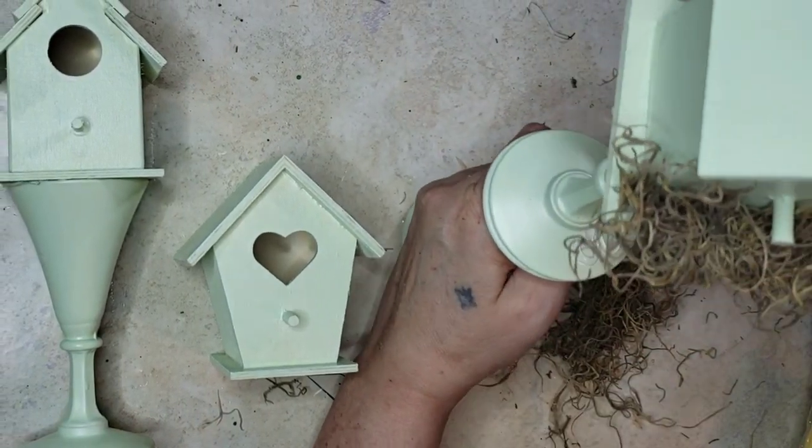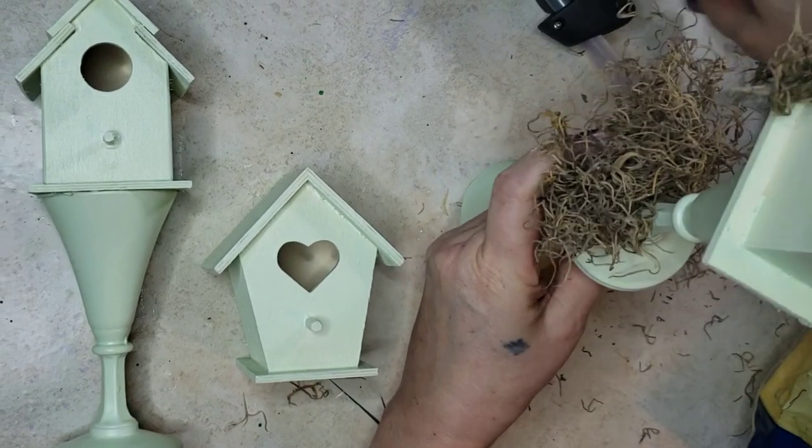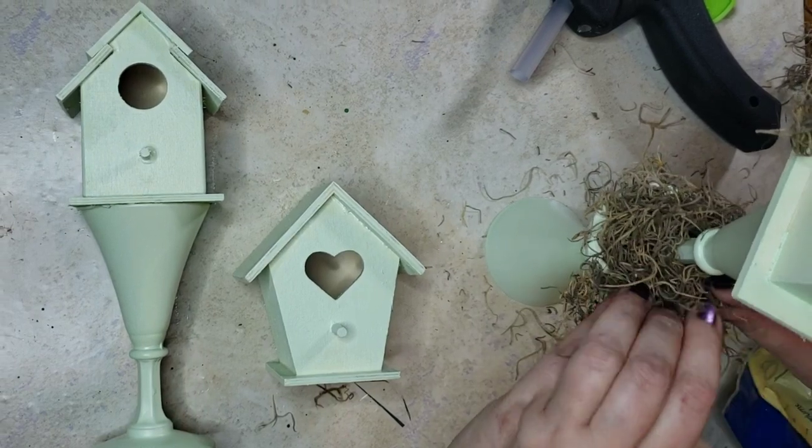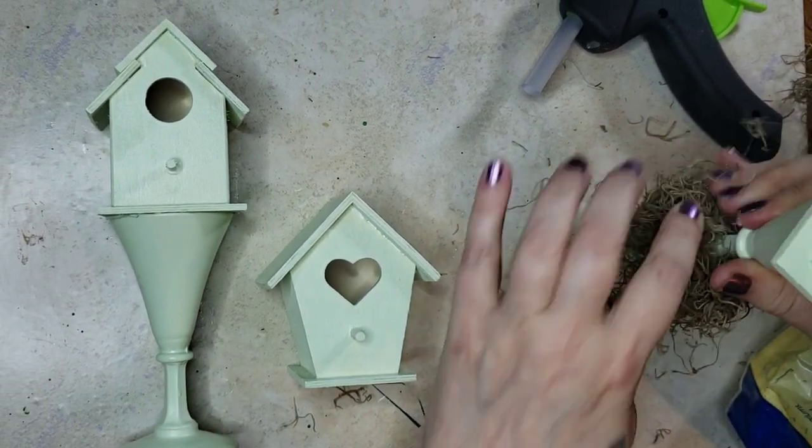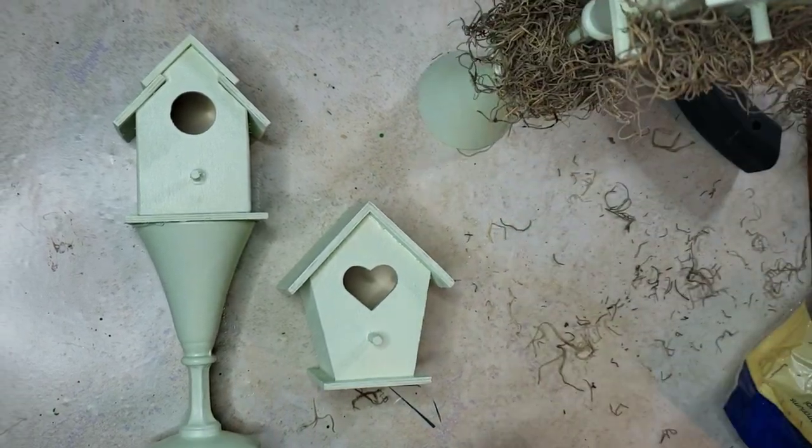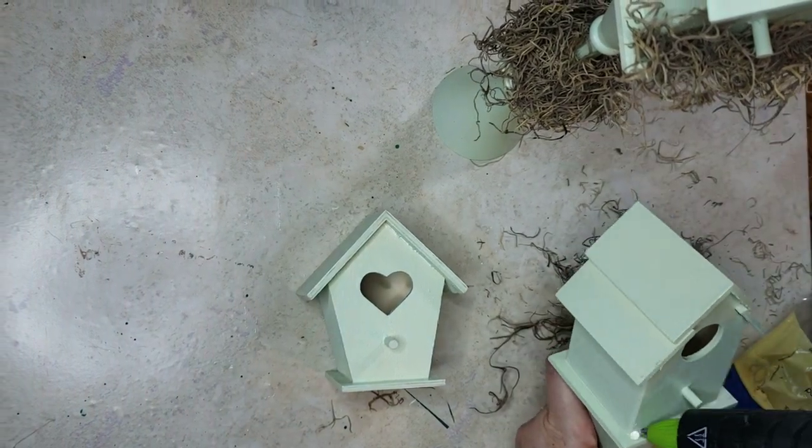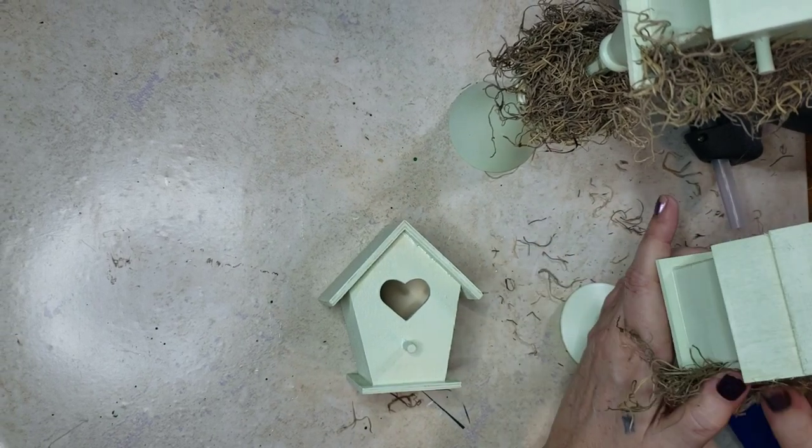And then the center part I'm gonna put some more moss and I'm gonna glue that all the way around. Just laid it down on the hot glue and then brought it on around. Now I'm gonna put a little bit on that medium height birdhouse as well, just right in the front.